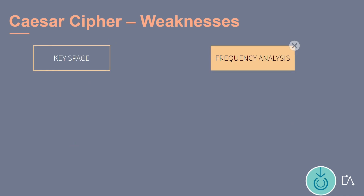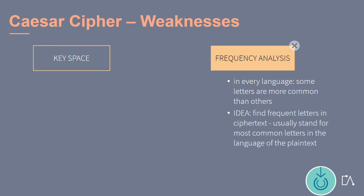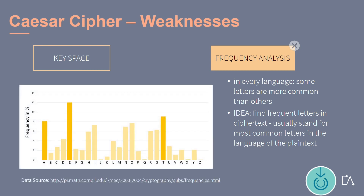The most promising attack on the Caesar Cipher is frequency analysis. In every language, some letters are more common than others. The idea is to look for frequent letters in the ciphertext, which usually stand for one of the common letters in the plaintext language. The table shows us the distribution of letters in the English language, and we see that the letters E, A, and T are the most common ones.